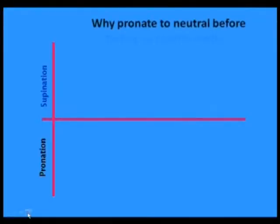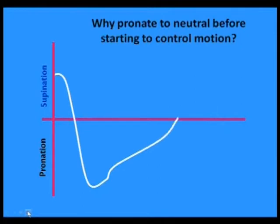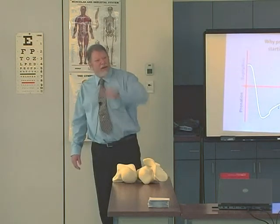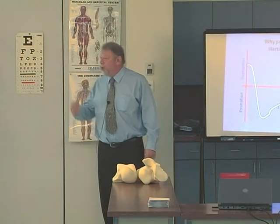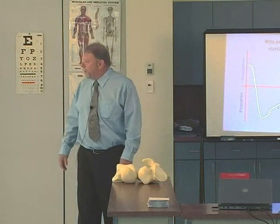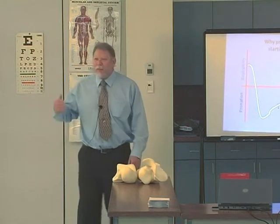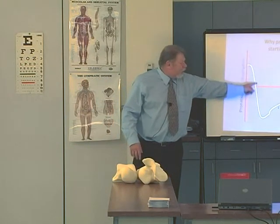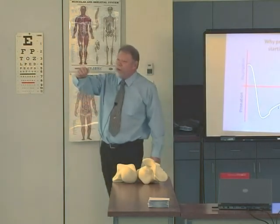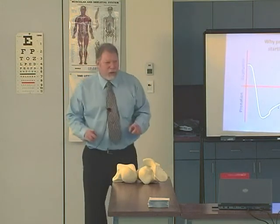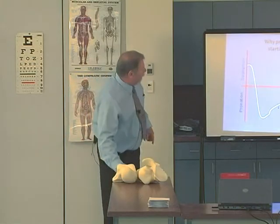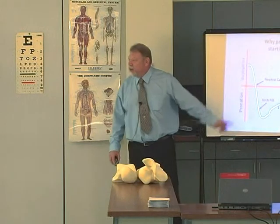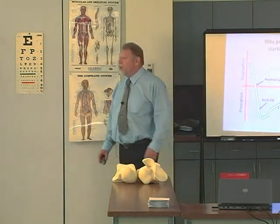If you were in a car going 100 miles an hour heading toward a stone wall on the opposite goal line of a football field, would you wait until you were at the 50 yard line to apply your brakes? No. You would start applying your brakes as early as possible. And yet, knowing that we heel strike in supination, we cast the foot in neutral. We allow the foot to pronate all the way to neutral before even considering controlling its motion. It doesn't make any sense. We cast, we wait until it's here before we think about controlling it — then we send it to the lab and they fill in the arches, waiting until you're on the 20 yard line before applying your brakes.